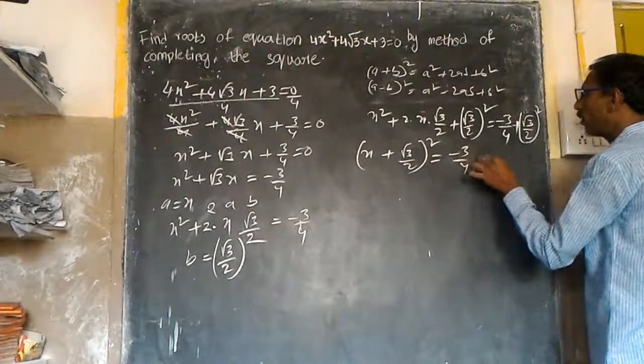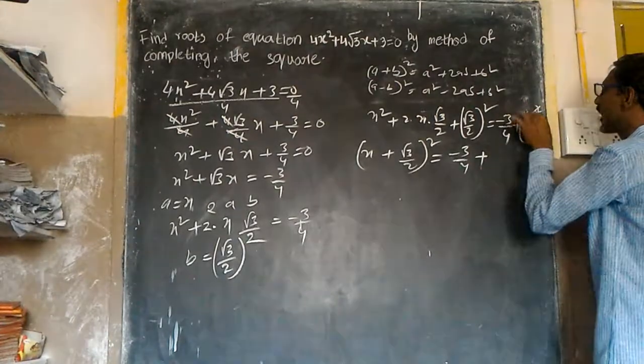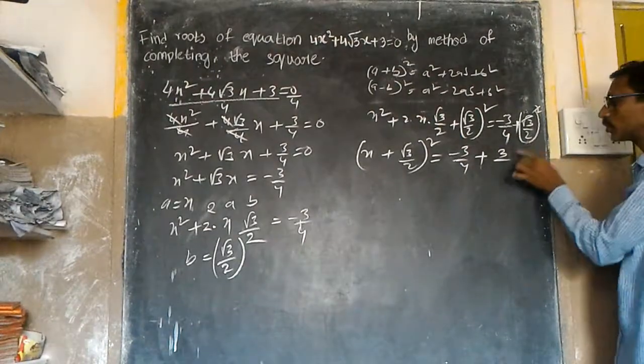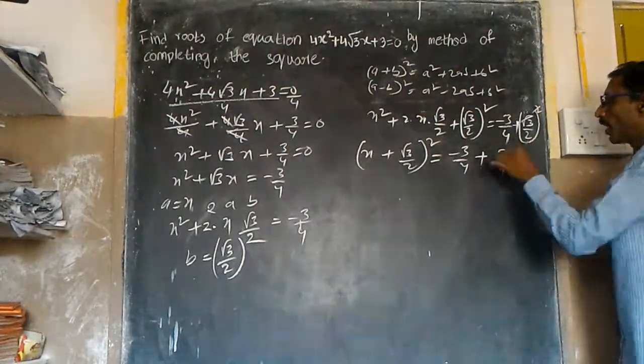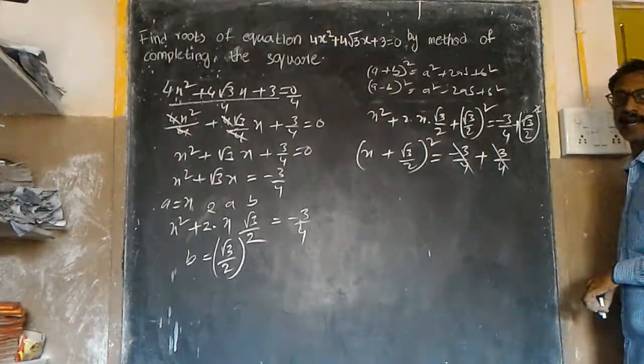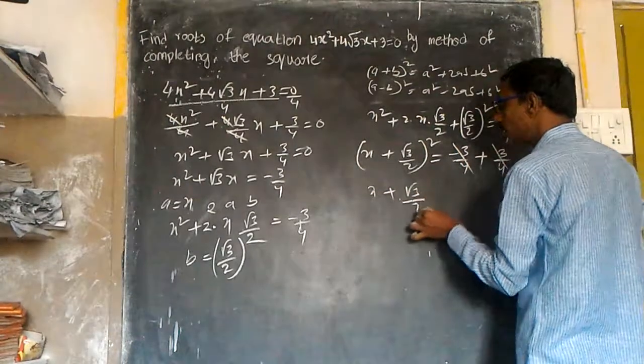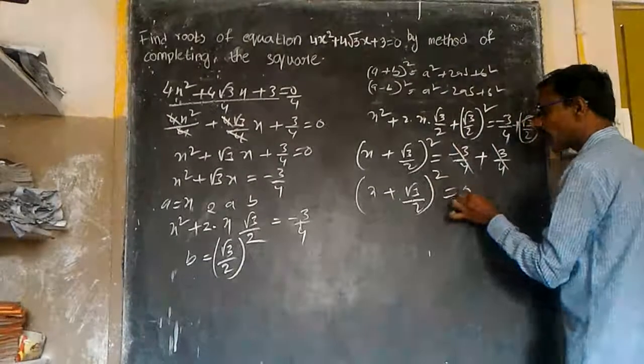On the right side: -3/4 + 3/4, the 3's are the same so they cancel. This equals zero. So (x + √3/2)² = 0.